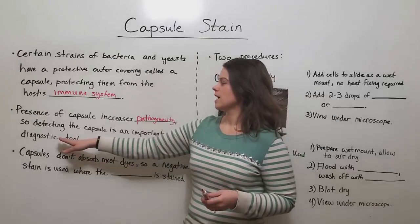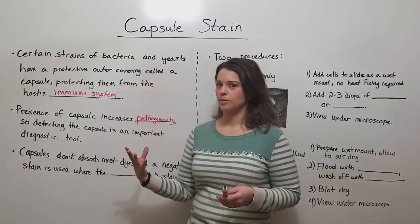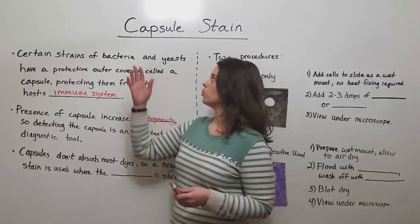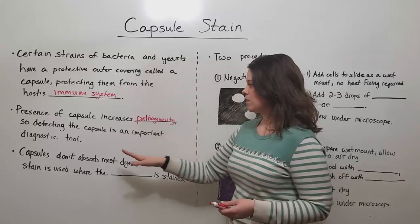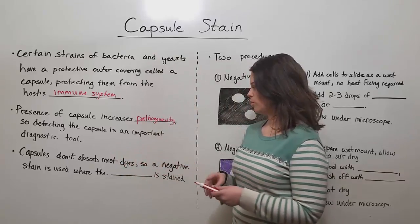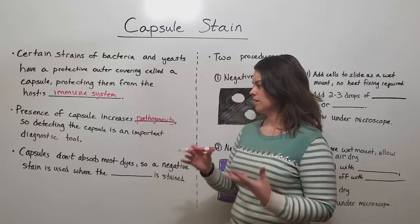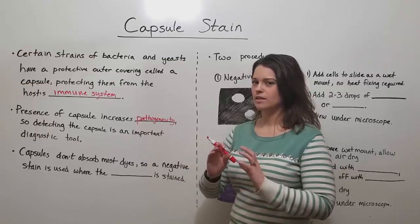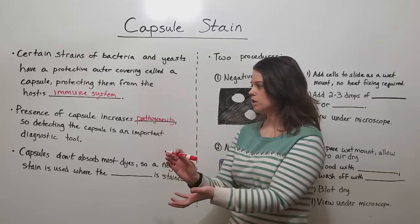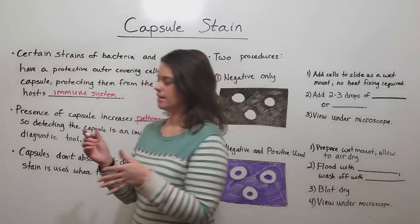In order to diagnose whether this particular strain has a capsule or not, you have to use what we call a capsule stain. Capsules themselves don't absorb most dyes, so we use what's called a negative stain, where instead of staining the actual bacteria or yeast cells, we're actually staining the background instead.